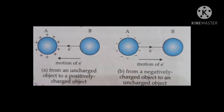This movement of electrons continues until the number of electrons on A and B becomes equal. In another example, a negatively charged object A is connected to an uncharged object B with a conducting wire. Since A has more electrons than B, electrons flow from A to B until the concentration of electrons on A and B becomes equal.